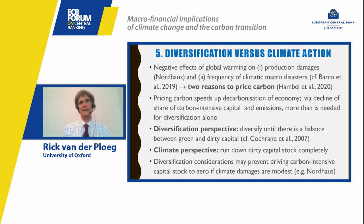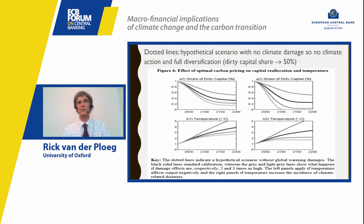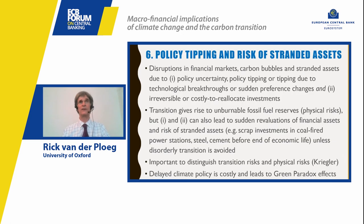It's important for central banks and economists to think more about the financial aspects of climate policy. Brown sectors will either have to adjust or run down carbon-intensive capital stocks. From a climate perspective you want to run down dirty capital stock completely, but you may not want to do that if you need some for diversification reasons. Diversification considerations can prevent driving carbon-intensive capital stock to zero when climate damages are modest — which somewhat frustrates climate policy. We need more capital asset pricing models to understand this dynamic.